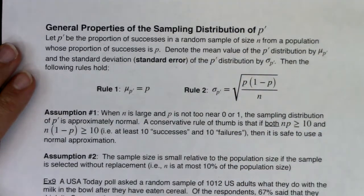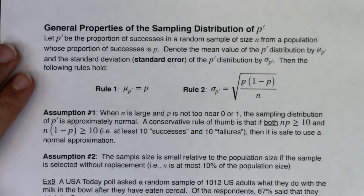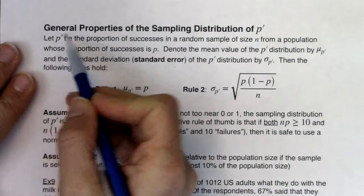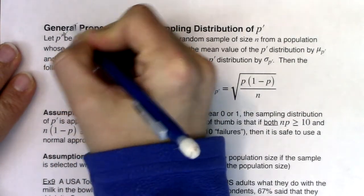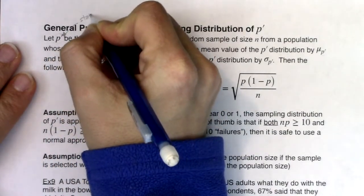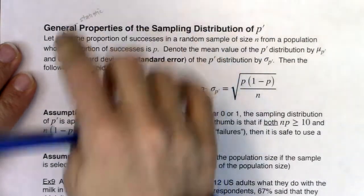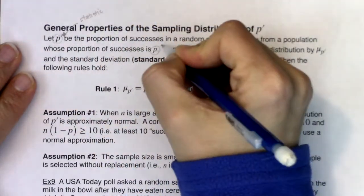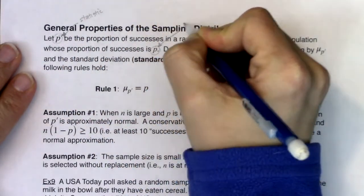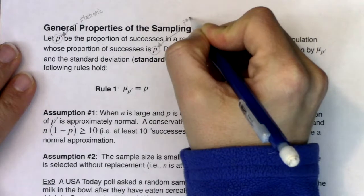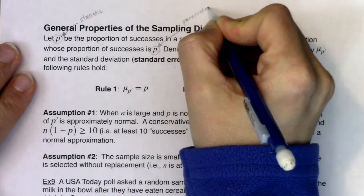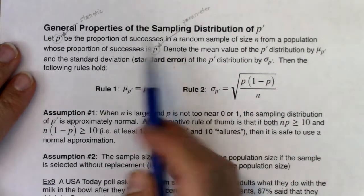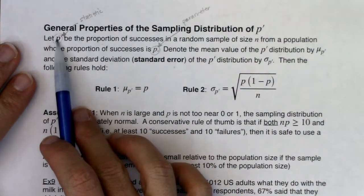Before we move on, let's clear up notation. P-prime is a statistic — it is a sample proportion. The plain p is your population proportion — that is a parameter. Going all the way back to chapter 1: here's your parameter, which comes from your population, and here's your statistic, which comes from your sample. The only way to find a parameter is to run a census, and we don't like to run censuses.